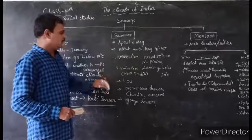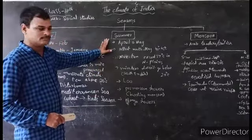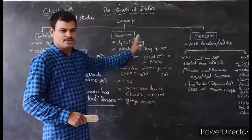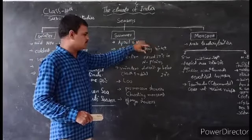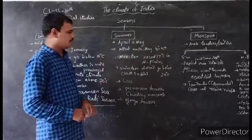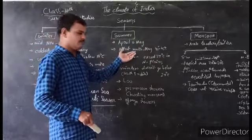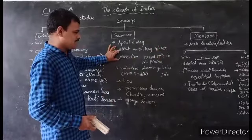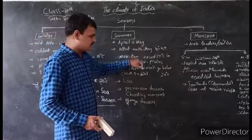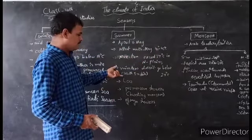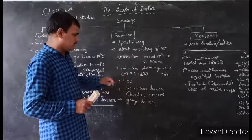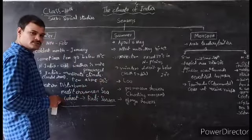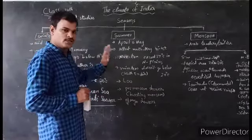What about summer? It starts from April, and the maximum temperature is recorded in May — so the hottest month is May. At that time the temperature is 41 to 42 degrees. Maximum temperature exceeds 37 degrees in Northern Plains, and minimum temperature does not go below 20 degrees in South India in any season.